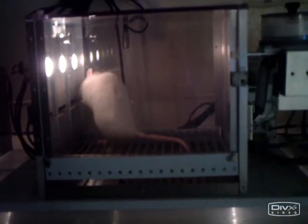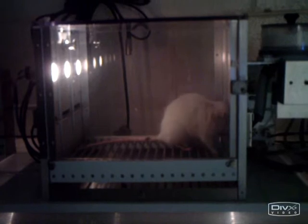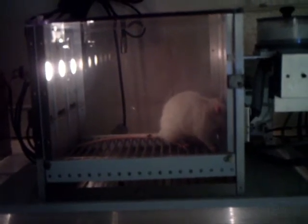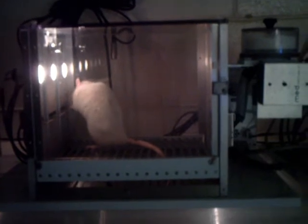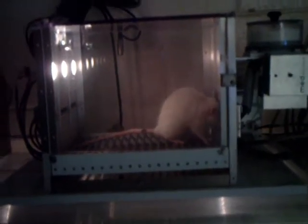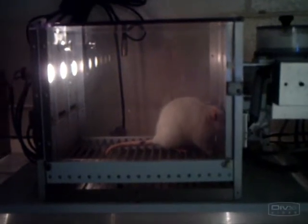But in order to get him to press the lever, first we shape the behavior. So that means if the rat does something close to pressing the lever, such as sniffing it, it gets a reward of a sugar pellet. Then he has to work a little bit harder, such as touching the lever for the reward. Eventually, he will learn that pressing the lever is what gives the sugar reward.